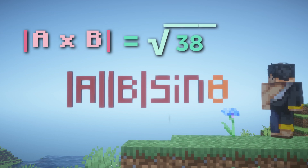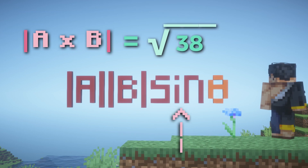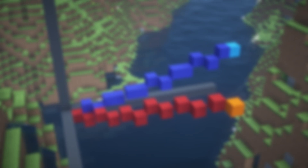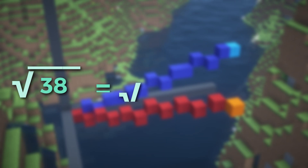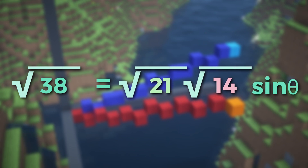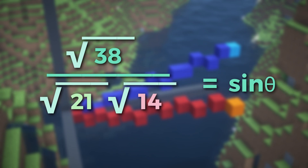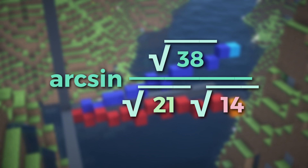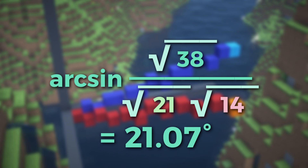Now the only unknown left is sine theta, so we can solve for that. The equation we start with is: the square root of 38 equals the square root of 21 times the square root of 14 times sine theta. Divide both sides by the square roots of 21 and 14, then find the inverse sine of the square root of 38 divided by 21 times 14, and we get a final answer of 21.07 degrees.